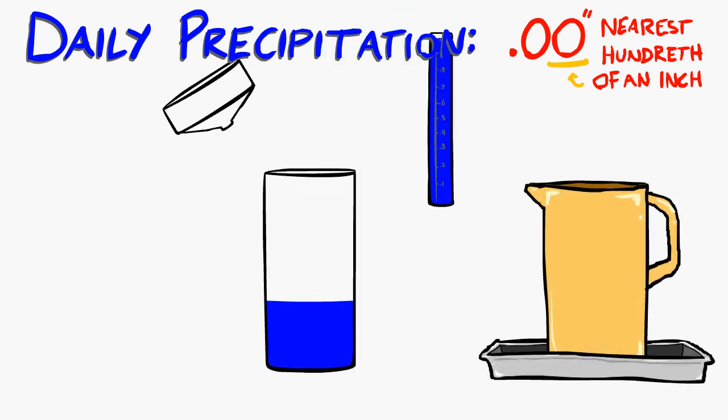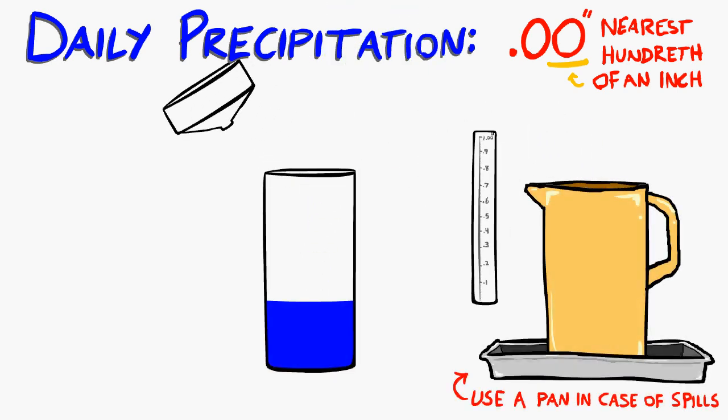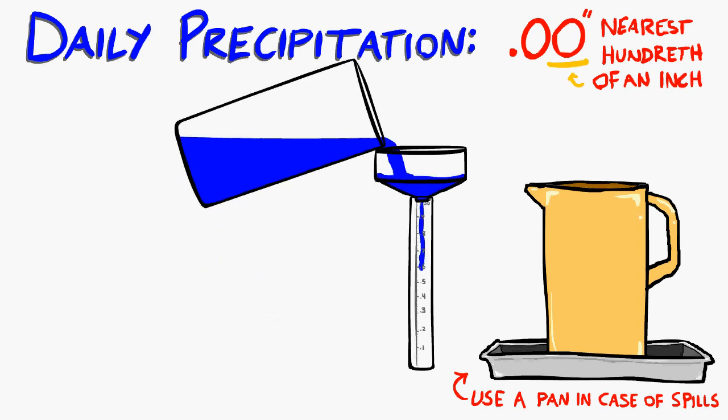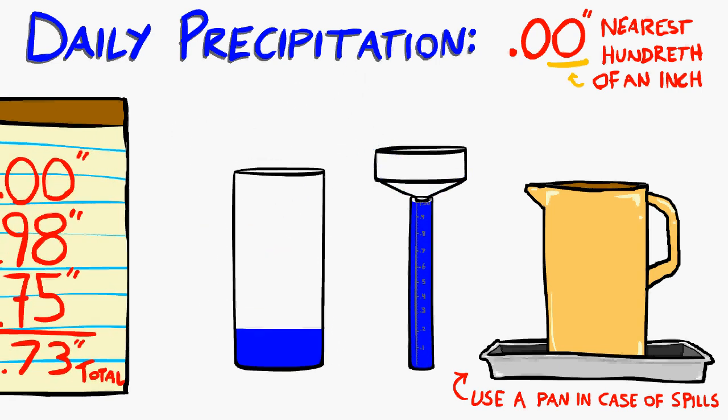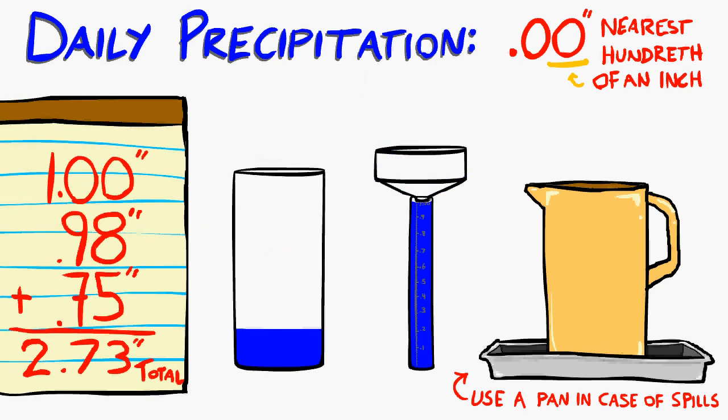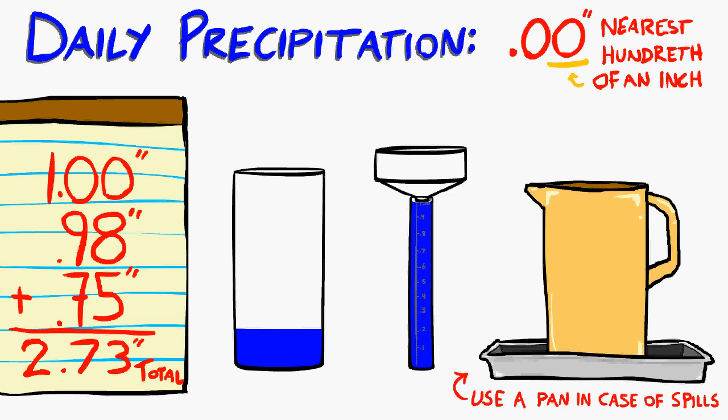When you receive more than one inch of rain, you will need to pour your first inch out, and then use the funnel to pour the additional amount into your inner tube, writing it down each time until you have measured the entire amount. View our training animation, called How to Measure Extreme Rainfall, to learn more.